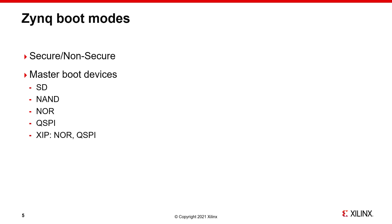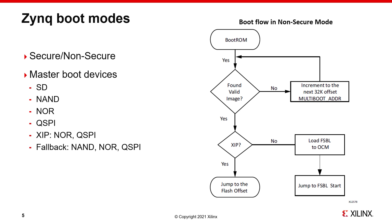NOR and QuadSPI have an optional execute in place mode (XIP), where the FSBL or user code is executed directly from the flash instead of being copied to the OCM. The PS master boot device holds one or more boot images. A boot image is made up of the boot ROM header and the FSBL. To recover from an error condition, the fallback feature enables the boot ROM to try to load another bootable image from the same boot device. NAND, NOR, and QuadSPI support fallback.